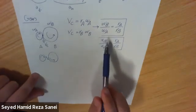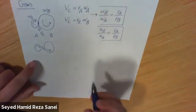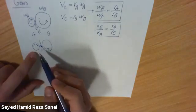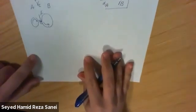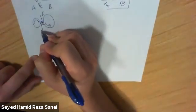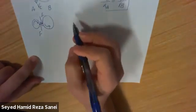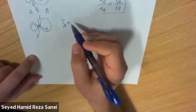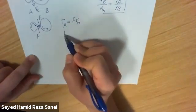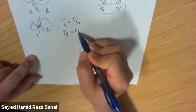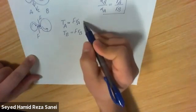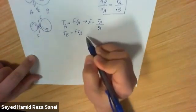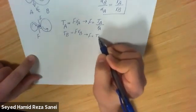Now we can talk about torque as well. When gear A is moving clockwise, it applies a force F on gear B, and by Newton's third law the reaction force is also F. Torque is force times moment arm, so T_A equals F times R_A, and T_B equals F times R_B. Since the force is the same, rearranging gives T_A over R_A equals T_B over R_B.